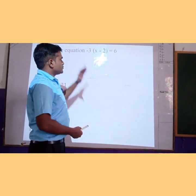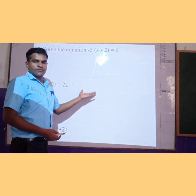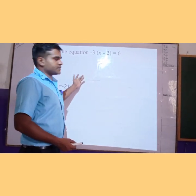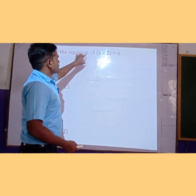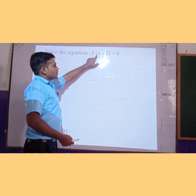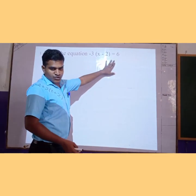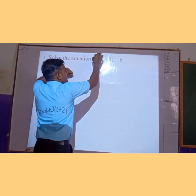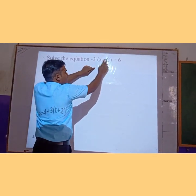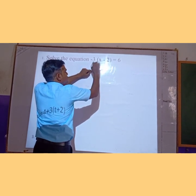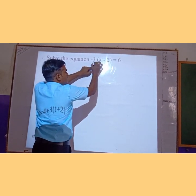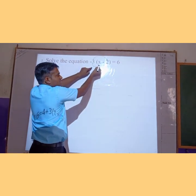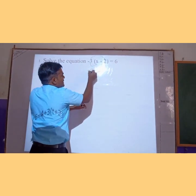Today we will solve more problems of simple regression and find the solution. First, we are given minus 3 into x minus 2 is equal to 6. So first we will break the parenthesis bracket by multiplying x and minus 2 by minus 3. Minus 3 multiplied by x gives minus 3x.